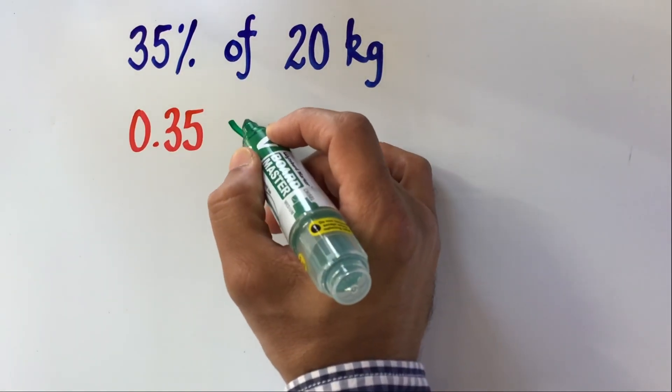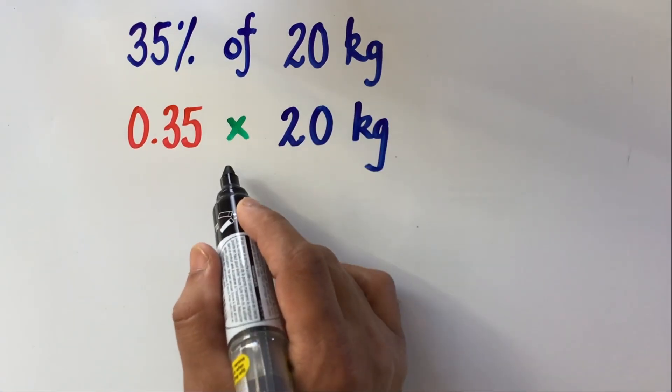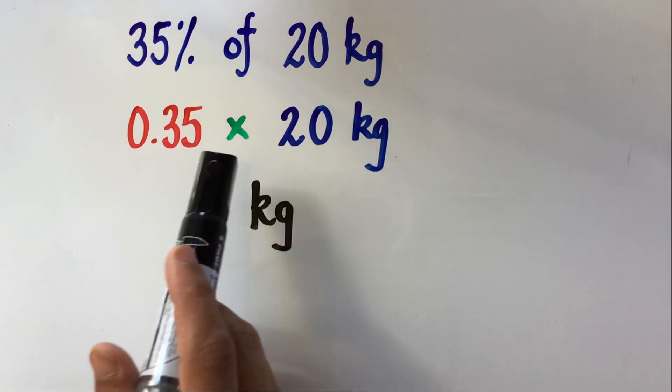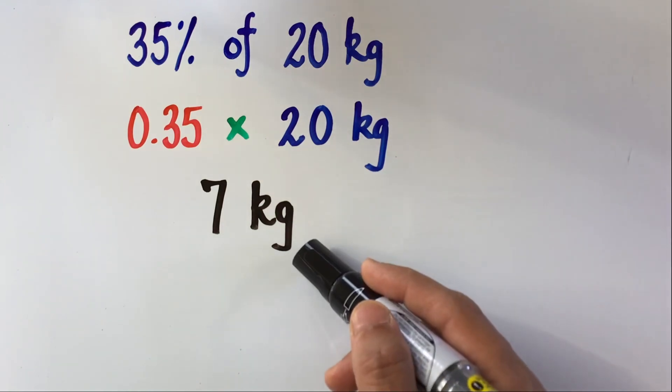Of means multiplication, and we write 20 kg as it is. We then multiply 0.35 with 20. 0.35 times 20 gives us 7. So 35% of 20 kgs is 7 kgs.